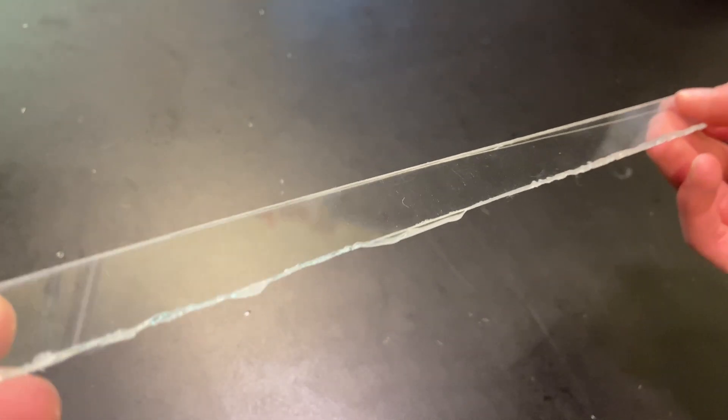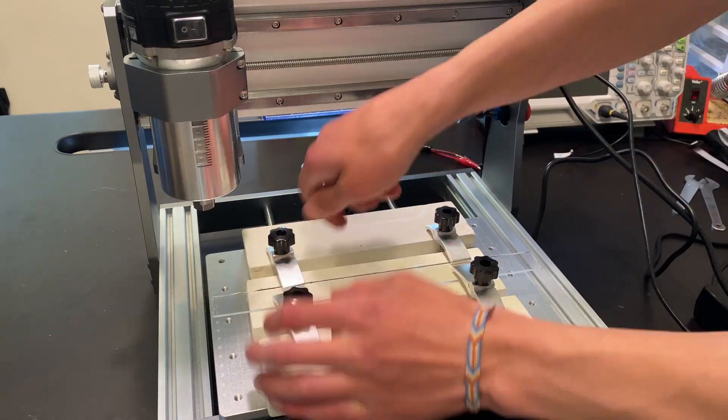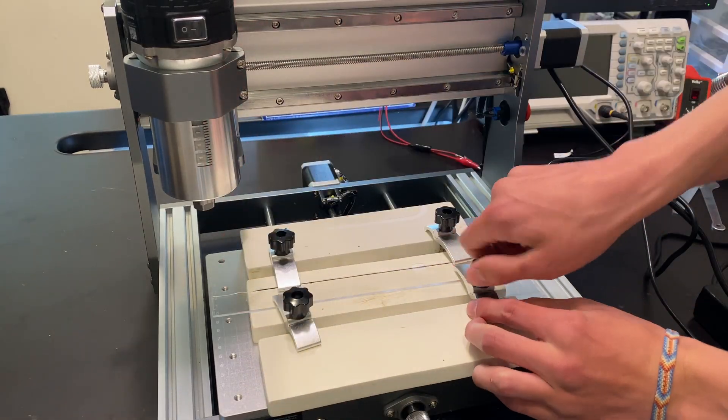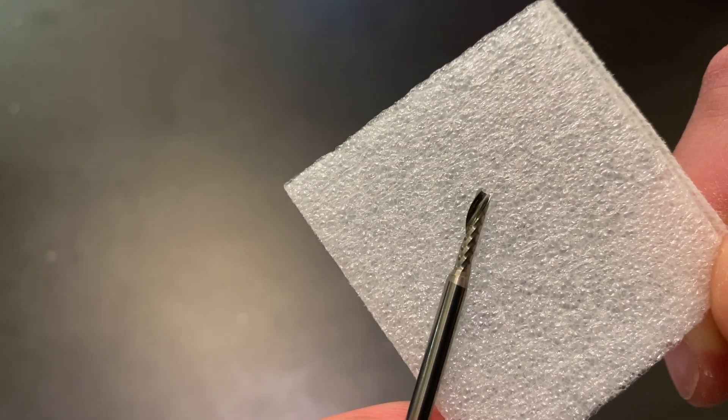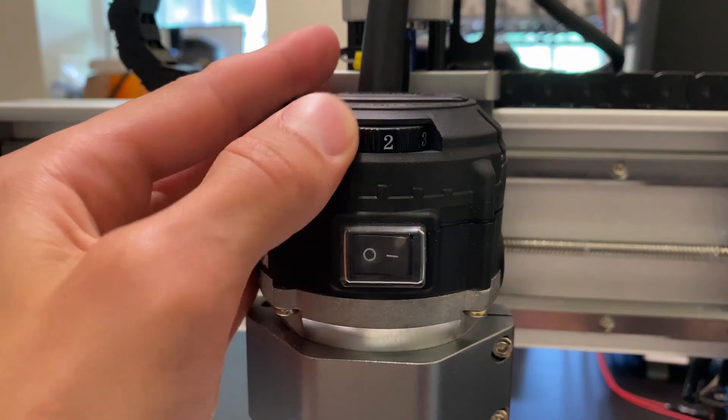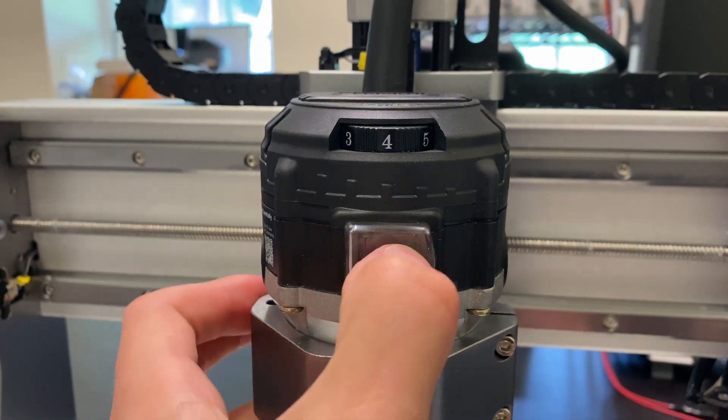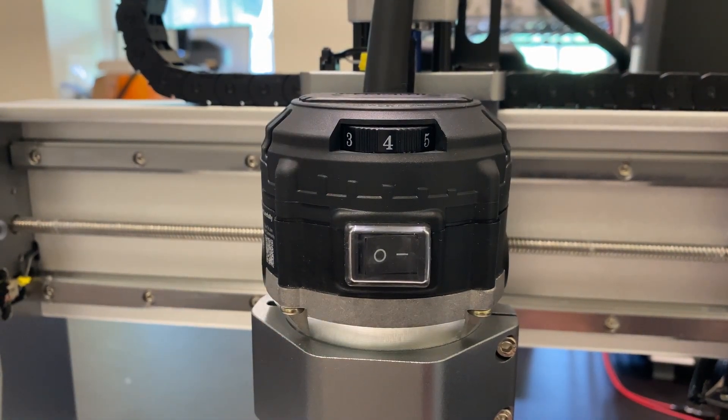I first ran a quick test in a small scrap piece of acrylic to get my feed rate and spindle speed dialed in. I used a 2.5mm diameter bit with a single flute and set the router RPM to 4, which means roughly 20,000 RPM. And then I used a feed rate of about 70 inches per minute.